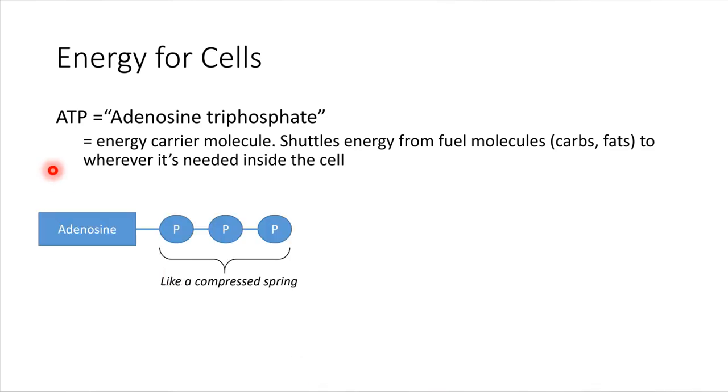Adenosine triphosphate basically has this structure. It's an adenosine group, and it has three phosphate groups attached to it. Phosphate groups are very electronegative. They are all negatively charged, which means they don't really like to be near each other.